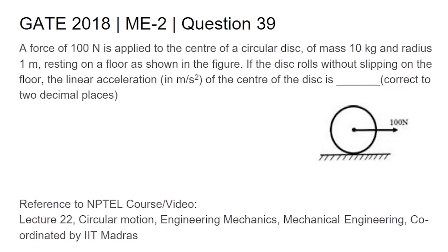In this video we will solve the 39th question from the second set of the mechanical engineering question paper conducted in GATE 2018. The question: a force of 100 Newton is applied to the center of a circular disk of mass 10 kilogram and radius 1 meter, resting on a floor as shown in the figure. If the disk rolls without slipping on the floor, the linear acceleration in meter per second square of the center of the disk is — correct to two decimal places. You can also refer to NPTEL video lecture number 22, circular motion, engineering mechanics, mechanical engineering, coordinated by IIT Madras.